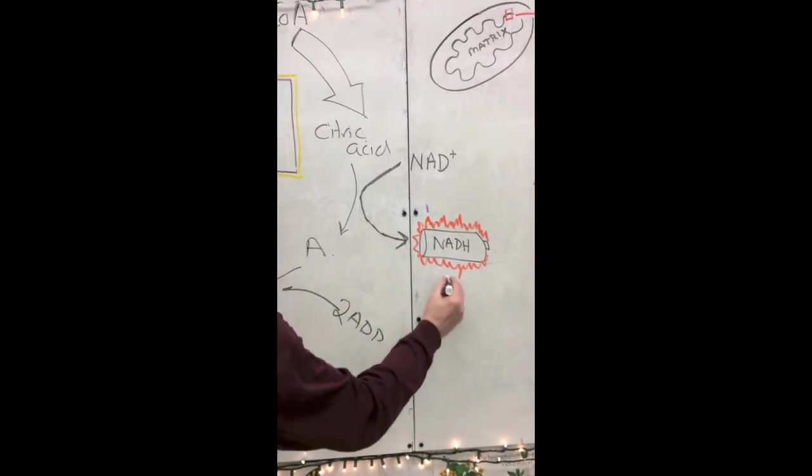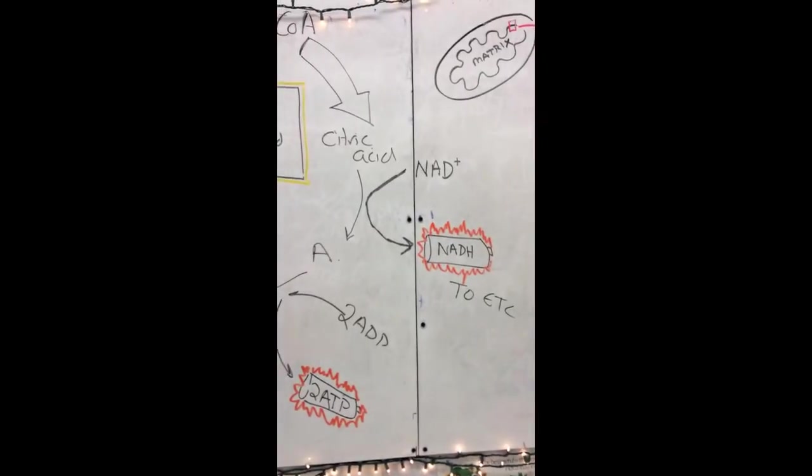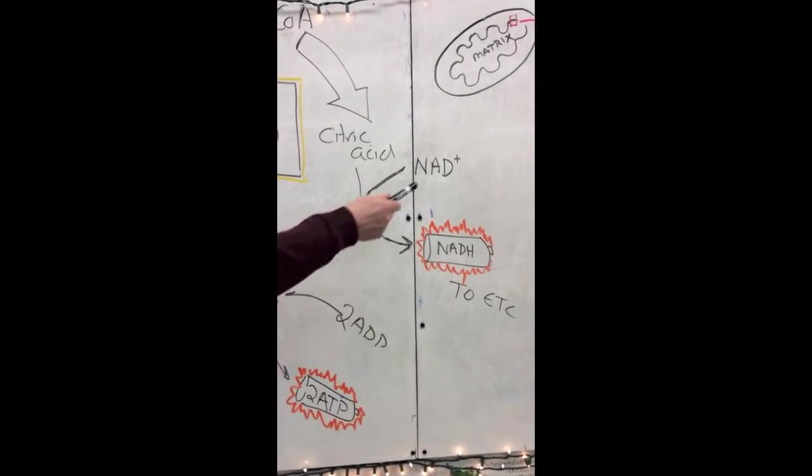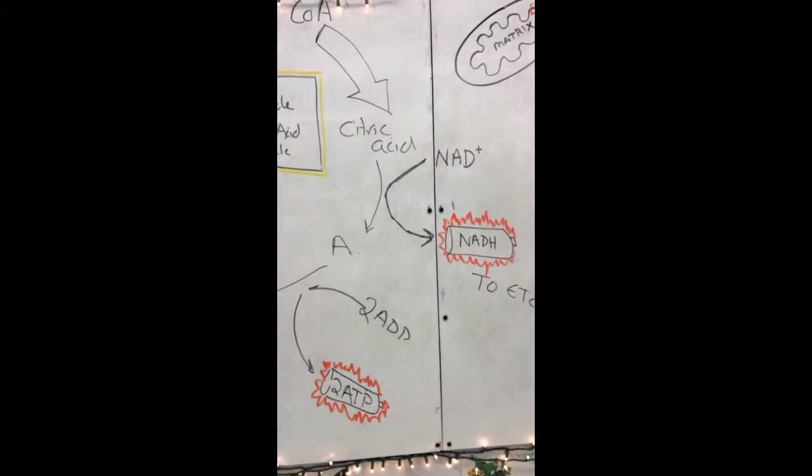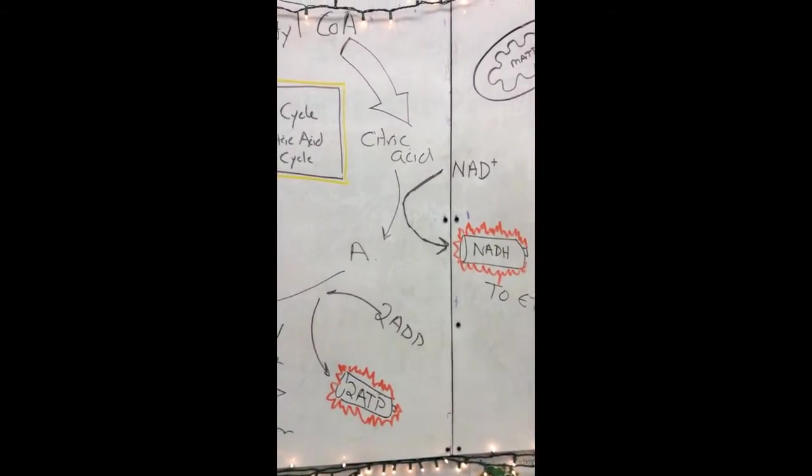These molecules are sent off to the ETC, the electron transport chain, to help drive that process. This process of charging up NADH actually occurs three times or more through the entire process of the Krebs cycle.